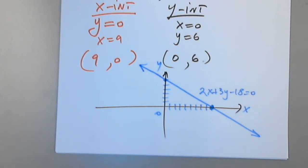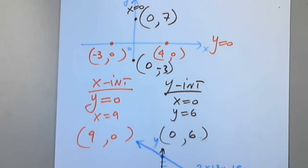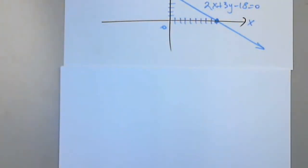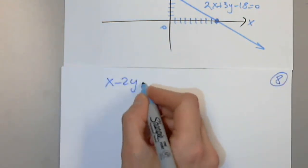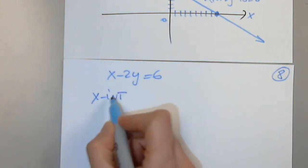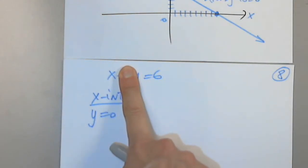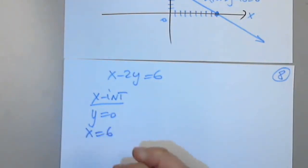Are we going to lose points if we just find the x and y intercepts? Yes, that's the method. To find the x and y intercepts. Here it is: x minus 2y equals 6. We want to graph using x and y intercepts.